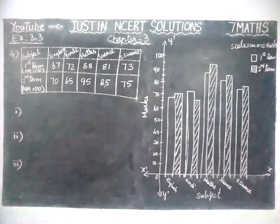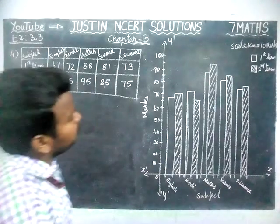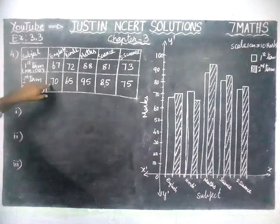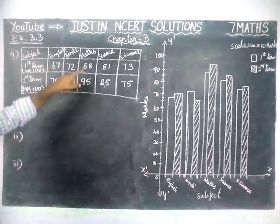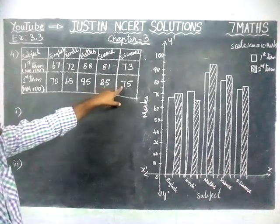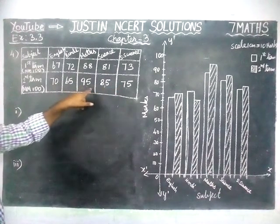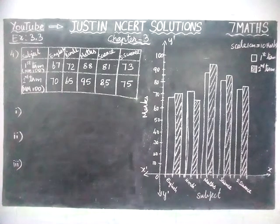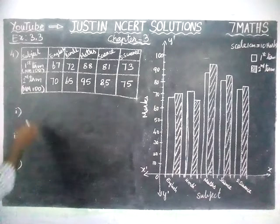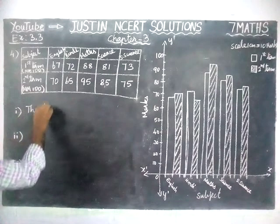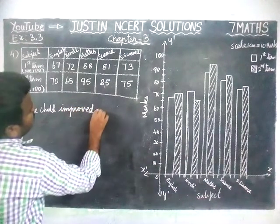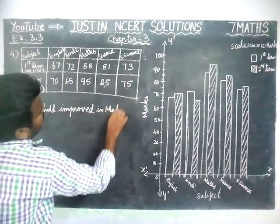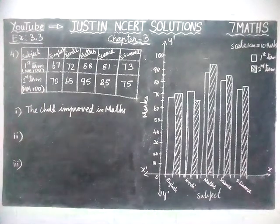The first question is: in which subject has the child improved his performance the most? You can see that English has a 3-mark difference, Hindi went down from 72 to 65, maths went from 88 to 95 — a difference of 7. Science has 4 marks difference and social science only 2. So the highest performance improvement is in the maths subject. The child improved the most in maths.